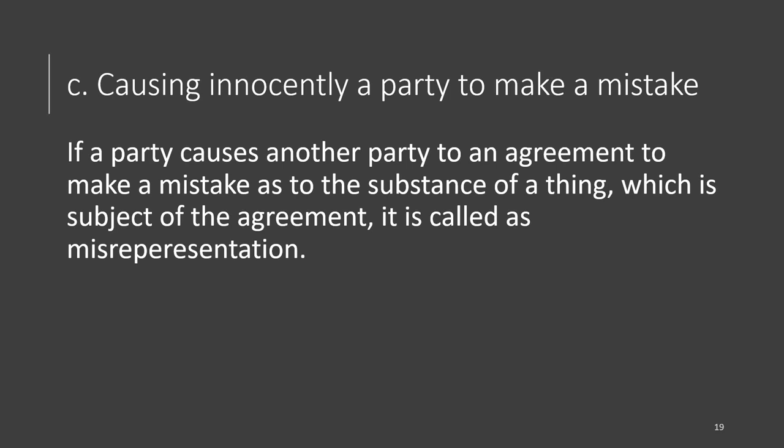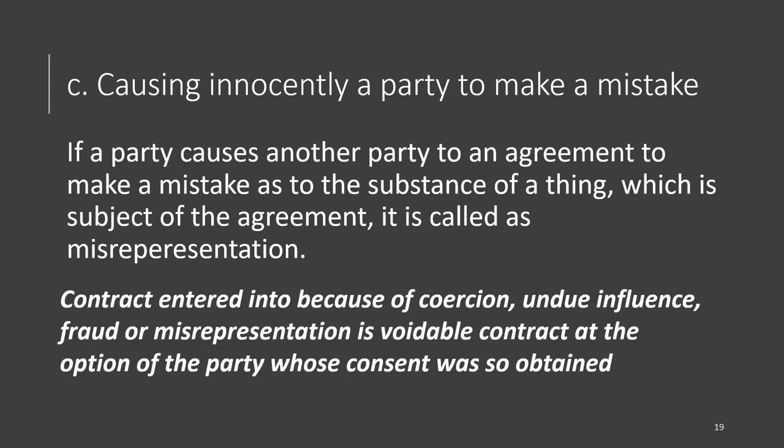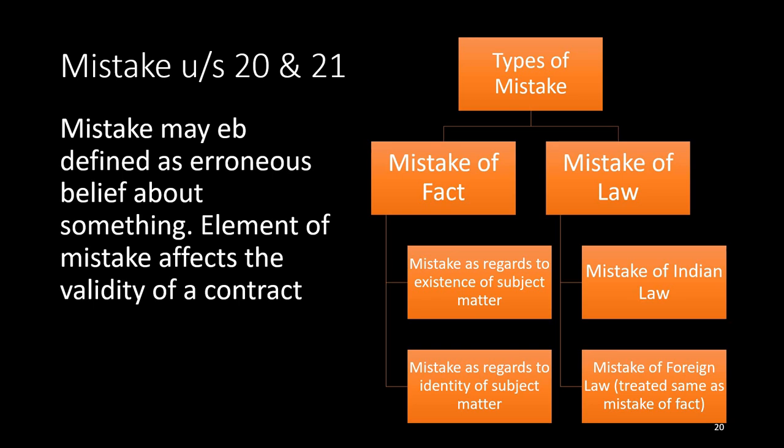The third type is causing innocently a party to make a mistake. If a party causes another party to an agreement to make a mistake as to the substance of a thing which is the subject of the agreement, it is called misrepresentation. A contract entered into because of coercion, undue influence, fraud, or misrepresentation is voidable at the option of the party whose consent was so obtained.